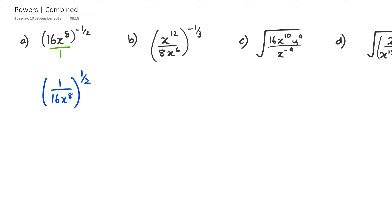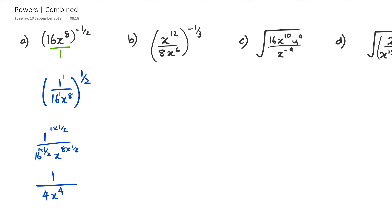Remember that 1 has a power of 1, and 16 has a power of 1 as well, which means when raised to the power of half, we get 1 to the power of 1 times half, over 16 to the power of half, and then x to the power of 8 times half. So 1 to the power of 1 times half is just 1. 16 to the power of half is the square root of 16, which equals 4. And 8 times half equals 4. So the final answer for question A is 1 over 4x to the power of 4.